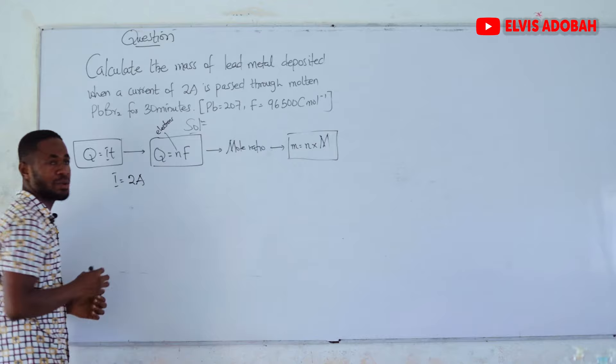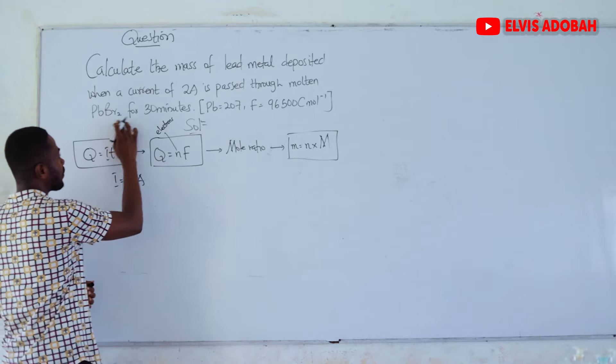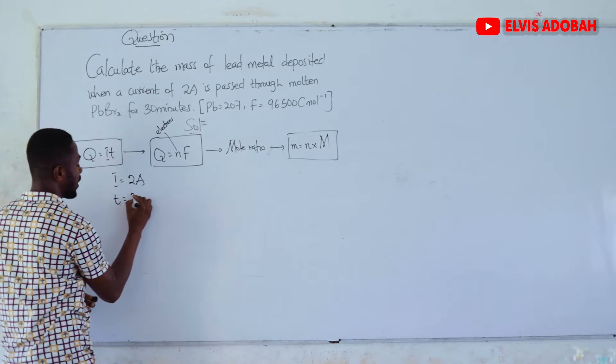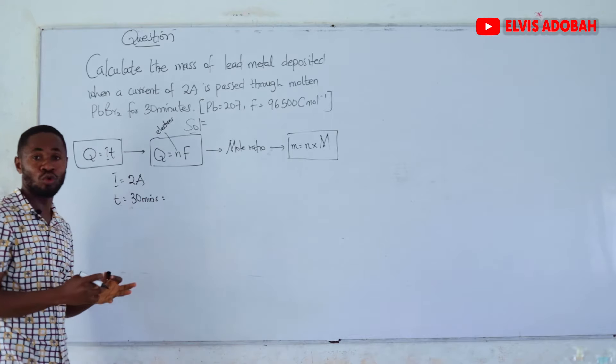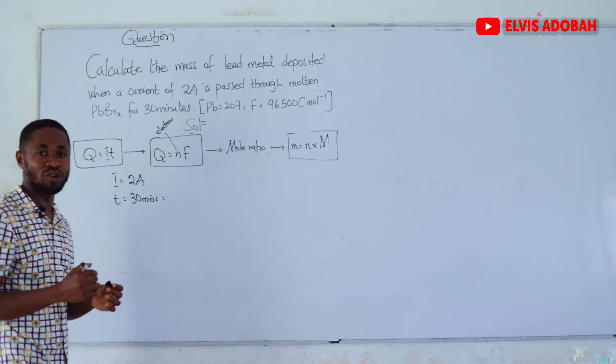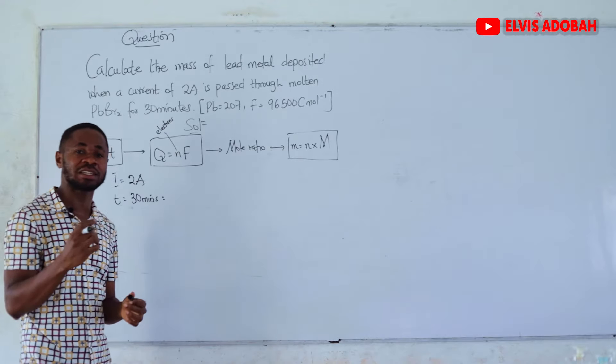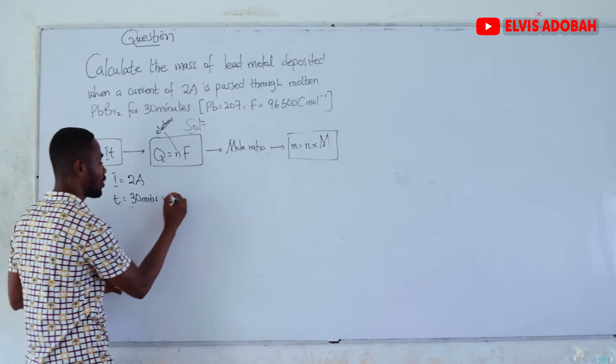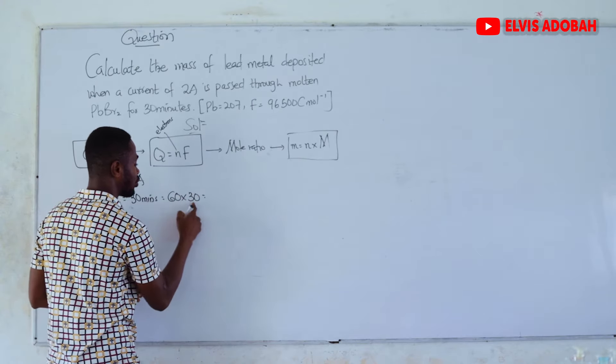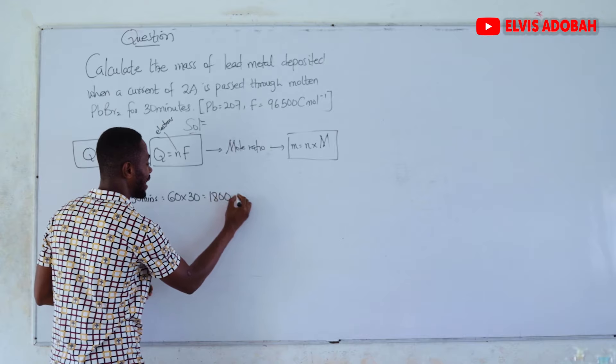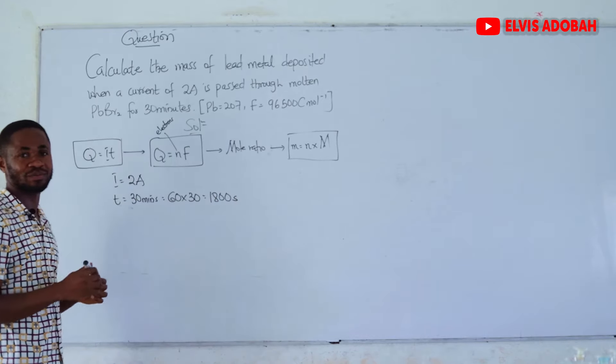Let's use this chart to solve our question. What are the parameters we have been given in the question? We have been given current of 2 amperes, then time, 30 minutes.